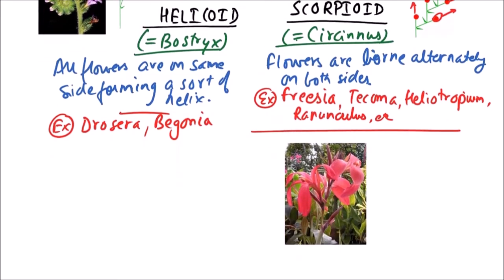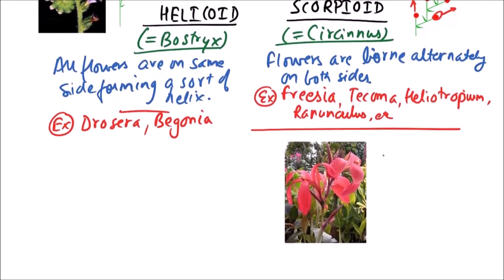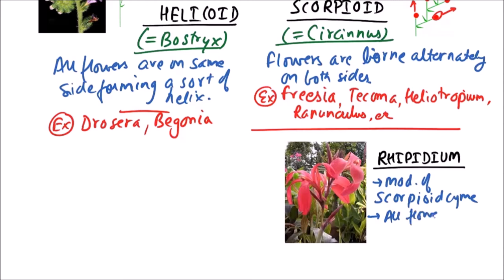There is a special case in scorpioid inflorescence, which is known as ripidium. In this, this is modification of scorpioid cyme and peculiarity is that all flowers are born in one plane.